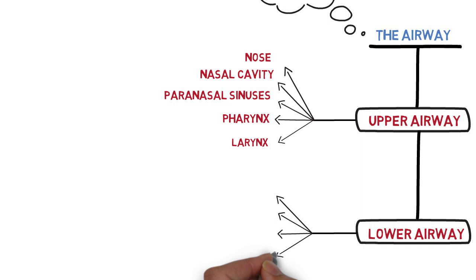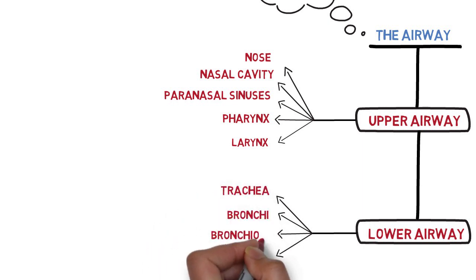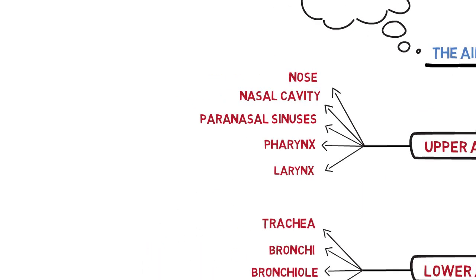And the lower airway is made up of the trachea, bronchi, bronchiole, and the alveoli.